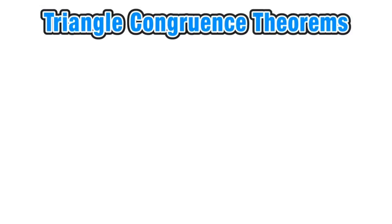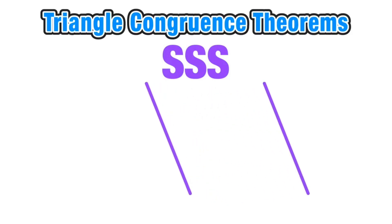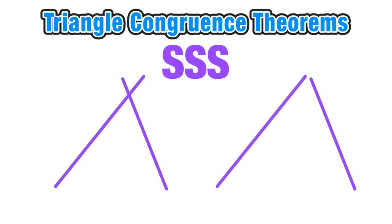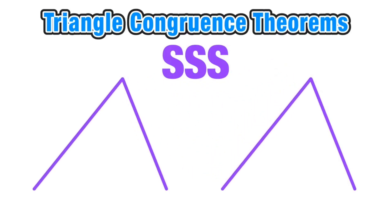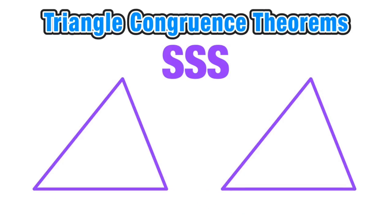The Side-Side-Side triangle congruence theorem states that if in two triangles we have three pairs of corresponding sides that are congruent — meaning they have the same length — then that's enough information to say that the triangles are congruent to each other, which means both triangles are exactly the same size and shape.